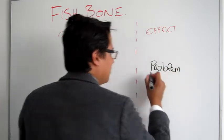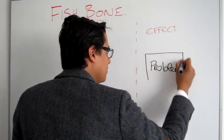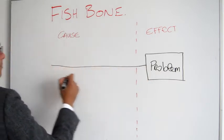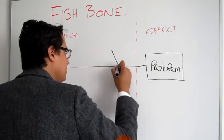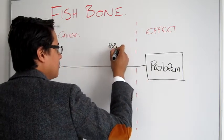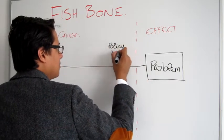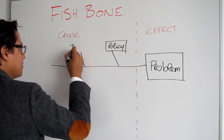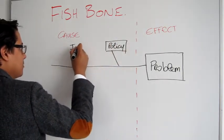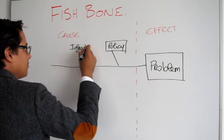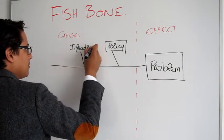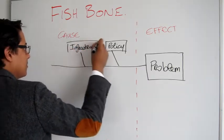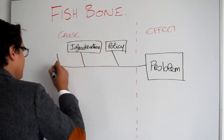The Fishbone Diagram and the 5 Whys work very well together. The Fishbone is simple in concept, really trying to identify the cause and the effect link. The effect being your problem statement. Put the problem statement at the head of the fish. Then, on the bones of the fish, put possible themes, such as policies or people or infrastructure.